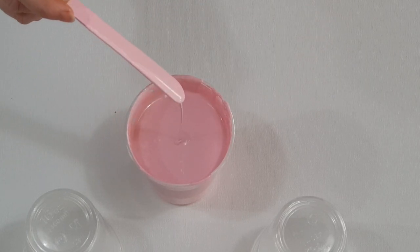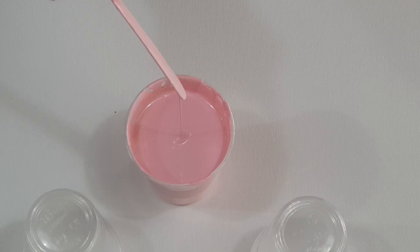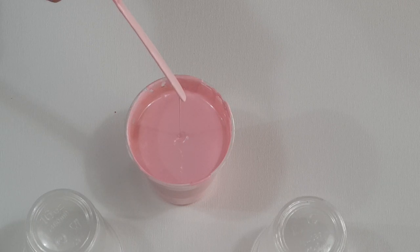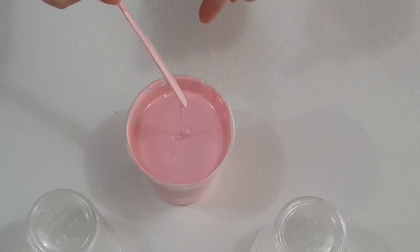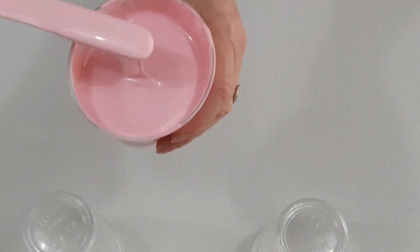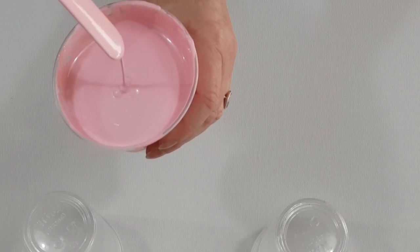And then when you drop your paint in from up high, it makes a little mound. So that's what you're looking for, that little mound. If it goes straight in and doesn't leave a mound, then it's probably too thin for creating cells.